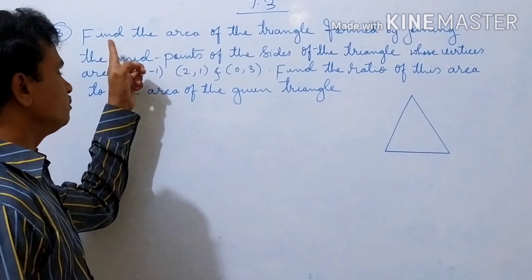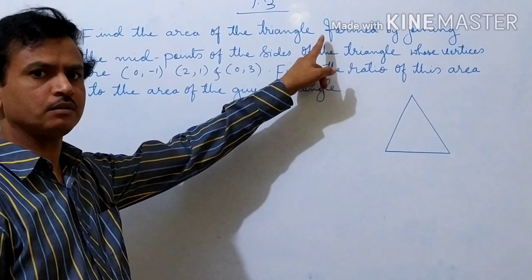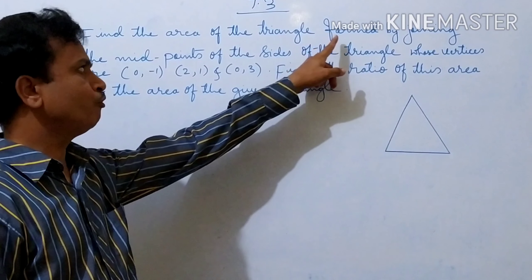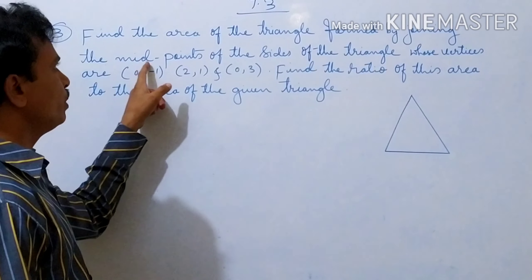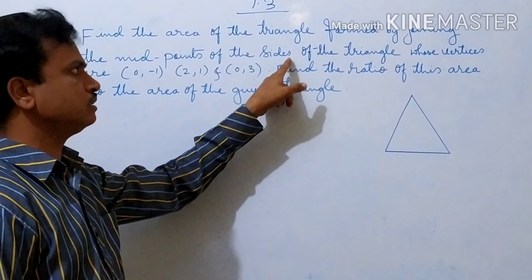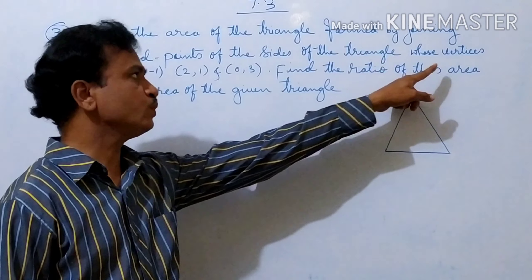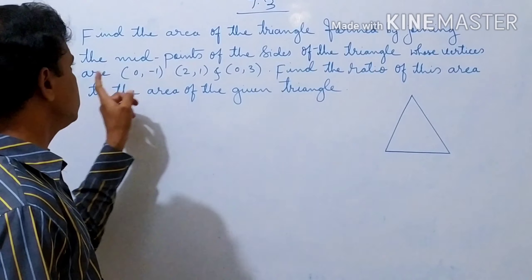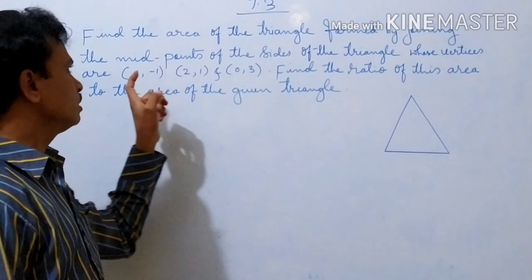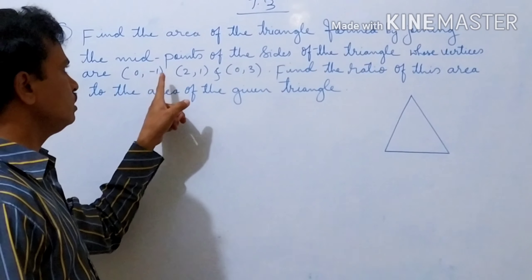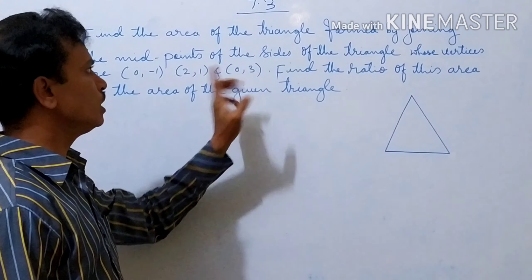Third question: find the area of the triangle formed by joining the midpoints of the sides of the triangle whose vertices are given — (0, -1), (2, -1), (0, 3).